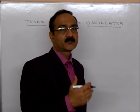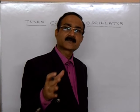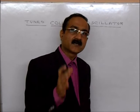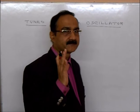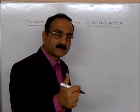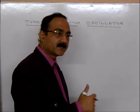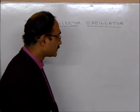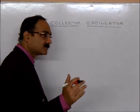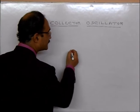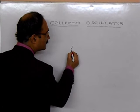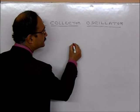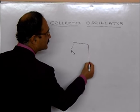I showed you the complete circuit at the beginning. Now let's learn how to draw it. If you learn to draw it this way, you will remember it for life. First, draw the transistor amplifier with its biasing.